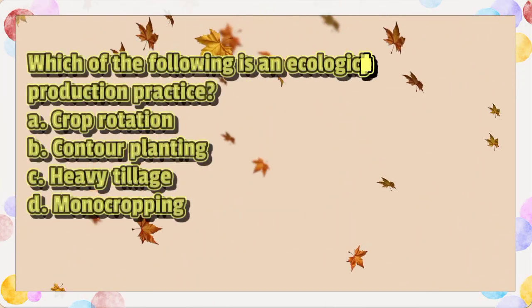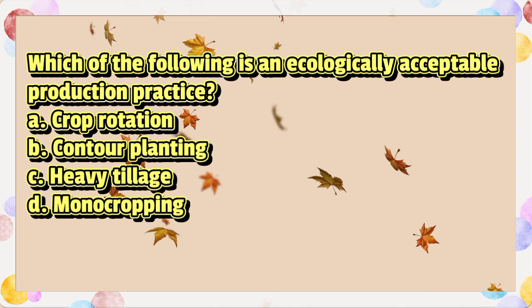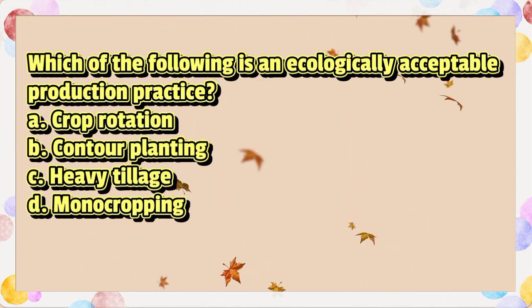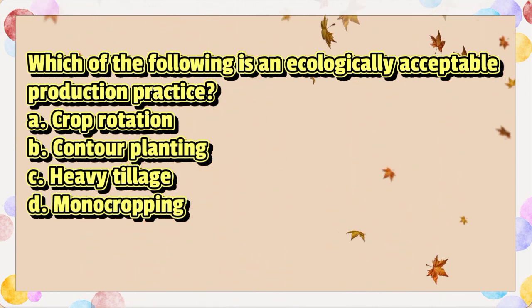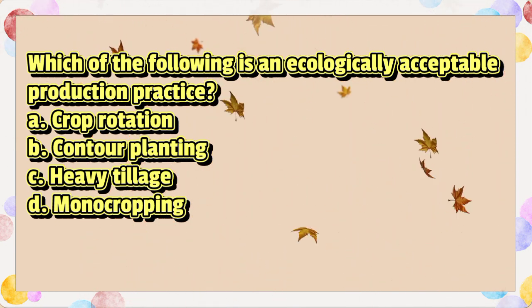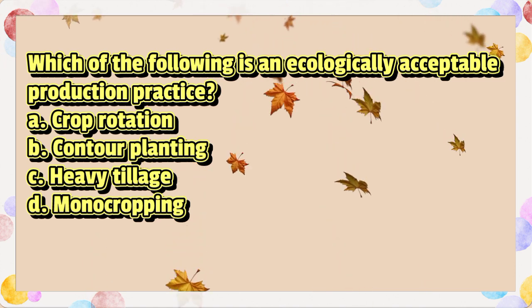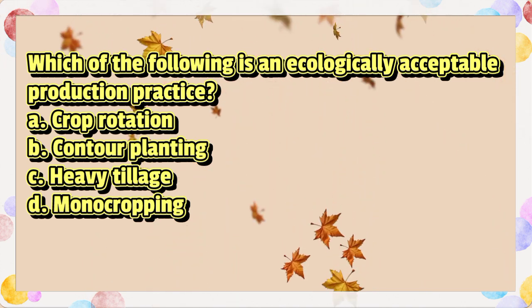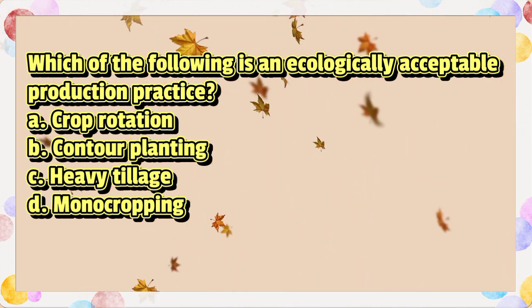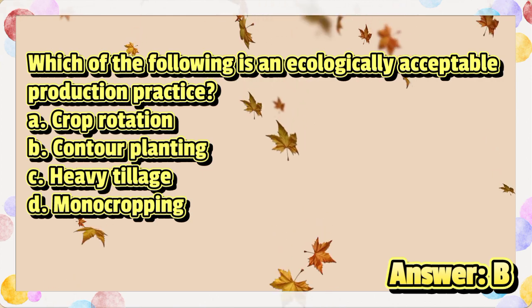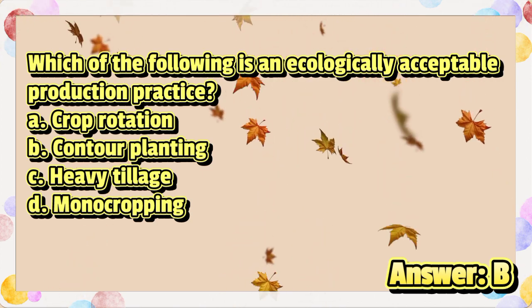Which of the following is an ecologically acceptable production practice? A. Crop rotation. B. Contour planting. C. Heavy tillage. D. Monocropping. The answer is letter B.